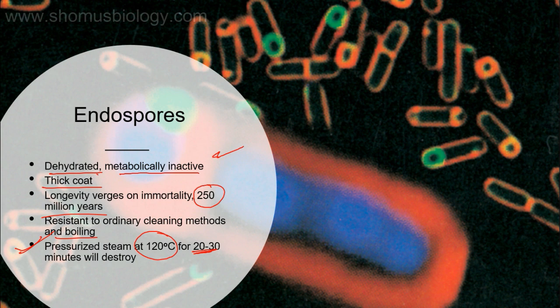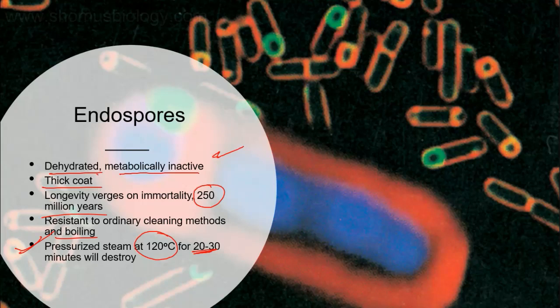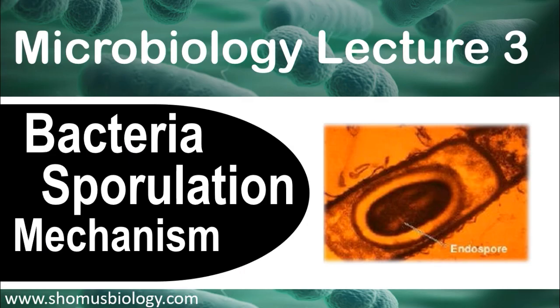Imagine a structure so complex and so important that it will not allow the bacteria to be killed — it can even survive for 250 million years, which is insanely remarkable, and then the bacteria can come back to life. Okay friends, I hope you understood the mechanism of bacterial sporulation and the use of bacterial spores. If you like this video, please hit the like button, share it with your friends, and subscribe to my channel for more videos. Bye.